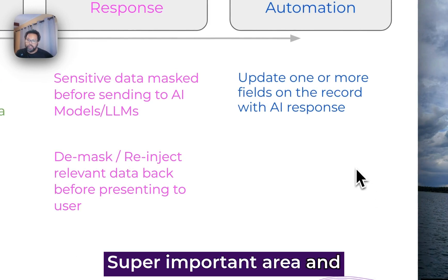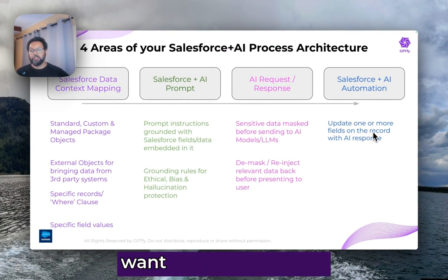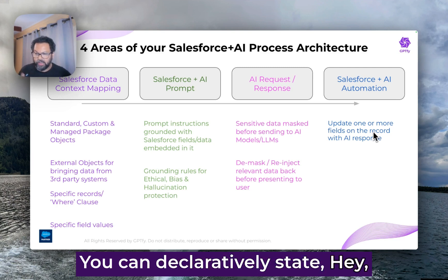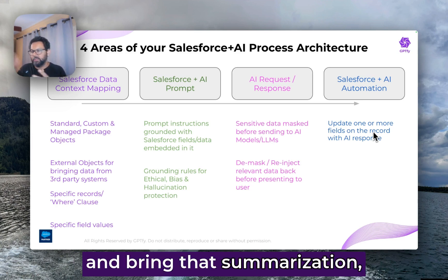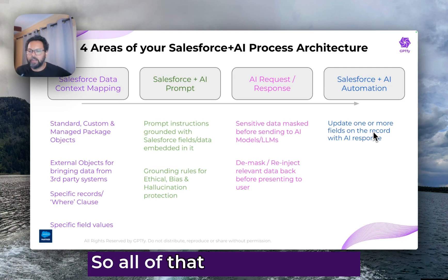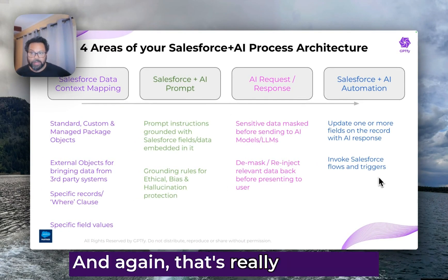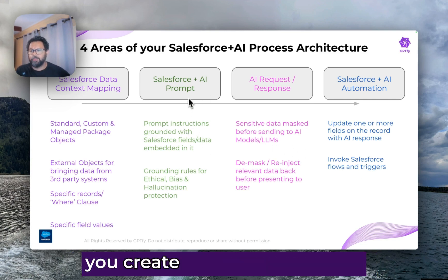That brings us to automation — a super important area that's often neglected, because most conversations stay in the first three areas. When you think about automation, you want the ability to take the response that comes back and update it into one or more fields without writing code or flows. In GPT-5, you can declare it to update the case summary, update the product for which the case was opened, update the account summary, bring a summarization of everything on an opportunity, give a sentiment and update it. You also want the ability to invoke all of this from flows and triggers. With GPT-5, any prompt you create exposes invocability — you can call it from a flow or a trigger.